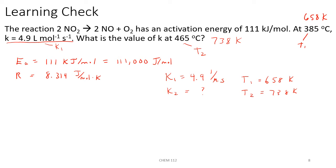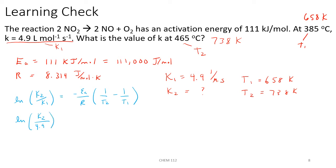So we're going to use our Arrhenius equation. We'll have the natural log of K2 over K1 equal to negative Ea over R times 1 over T2 minus 1 over T1. So we have the ln of K2, which is what we're trying to find, divided by K1 which is 4.9, equals negative Ea of 111,000 divided by R of 8.314, times 1 over T2 which is 738 Kelvin, minus 1 over T1 which is 658 Kelvin.